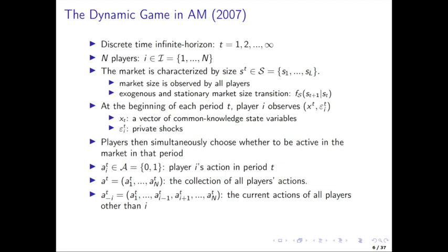The market is characterized by size — a common state variable, which can take values up to capital S_L. We may actually just discretize that, thinking of values one up to L. Market size is observed by all players — it's a common knowledge variable, following an exogenous and stationary market size transition. This is completely exogenous. Market size is something that goes on and is not affected by the choice of the players at all. An example of a non-exogenous state variable would be like technology in models with R&D investments, where a firm's R&D affects the transition for their technology.